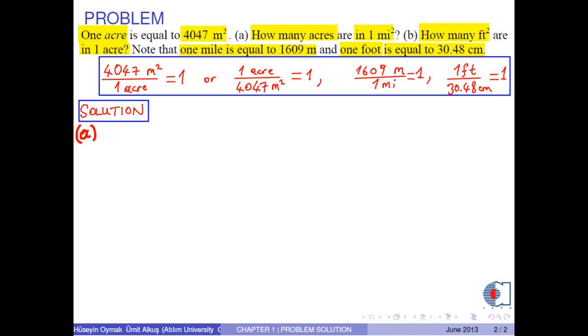In part a, we write one mile squared is equal to one mile squared, where mile squared is an unwanted unit. First, we convert miles into meters by this conversion factor, and we take the square of this. Miles squared are cancelled, and we are left with the unwanted unit meter squared.